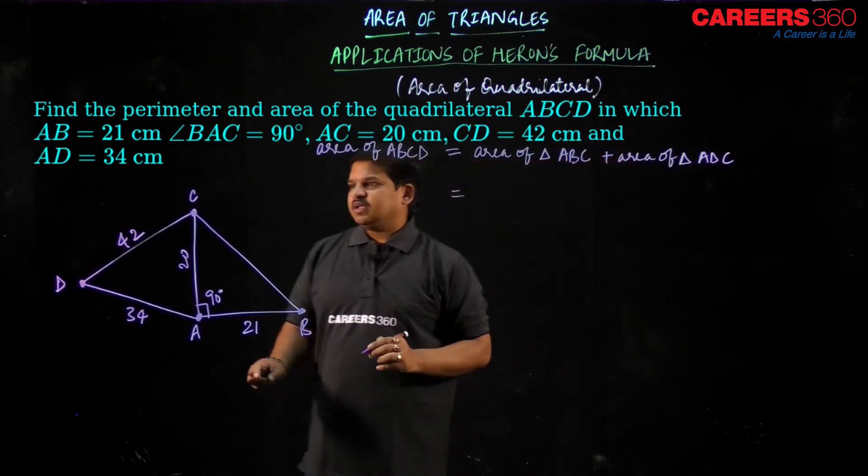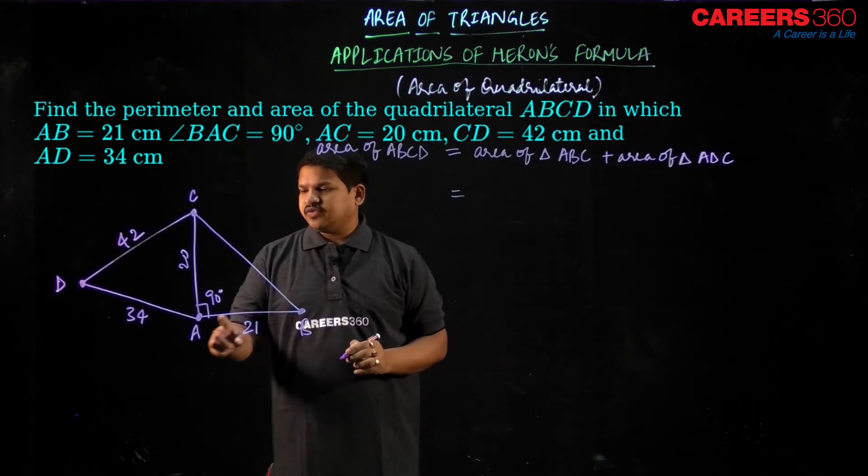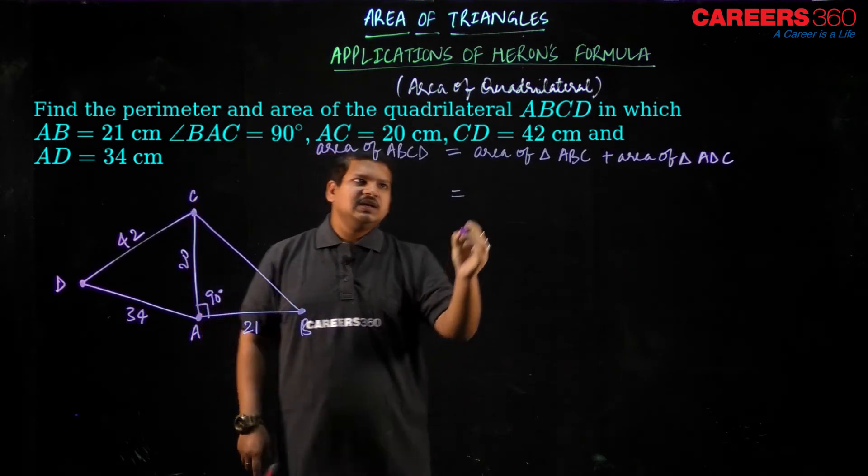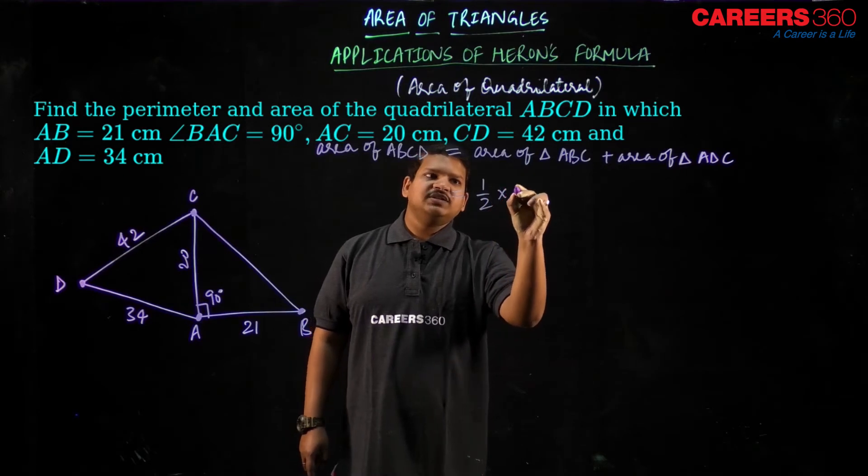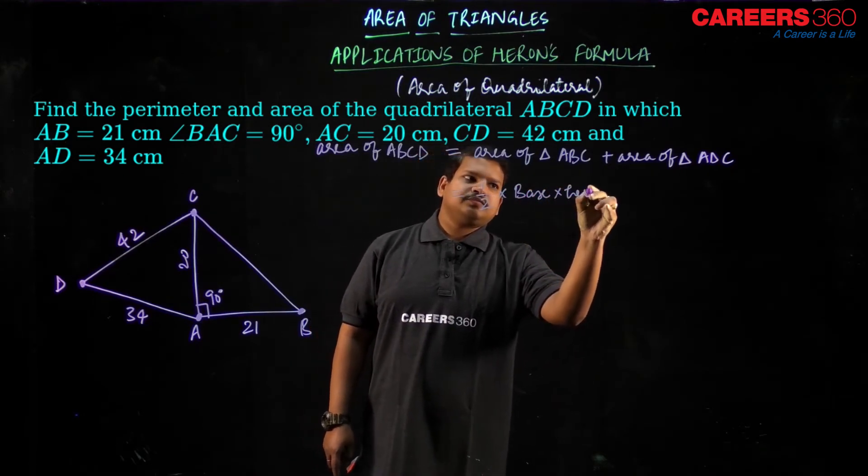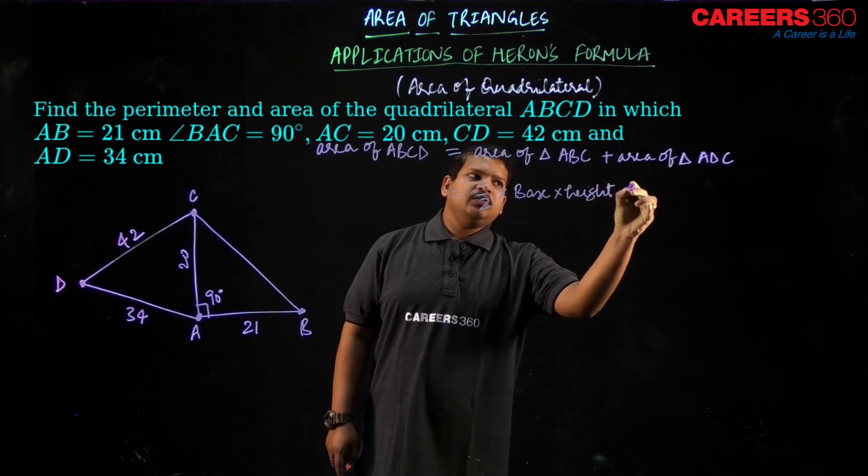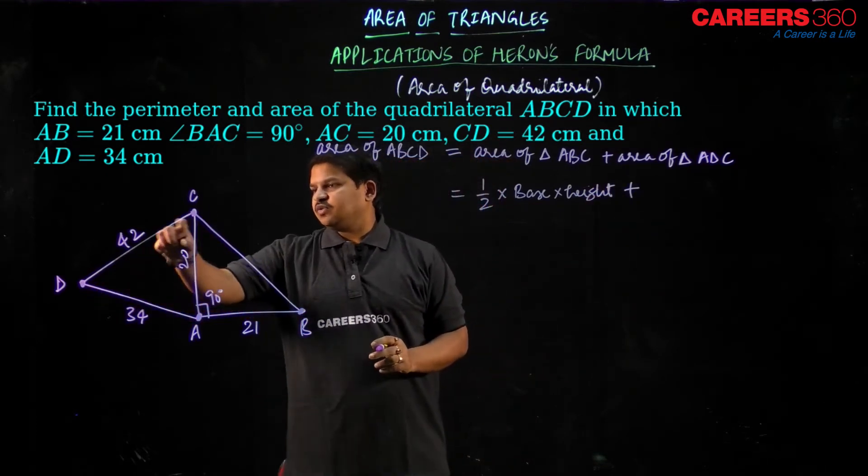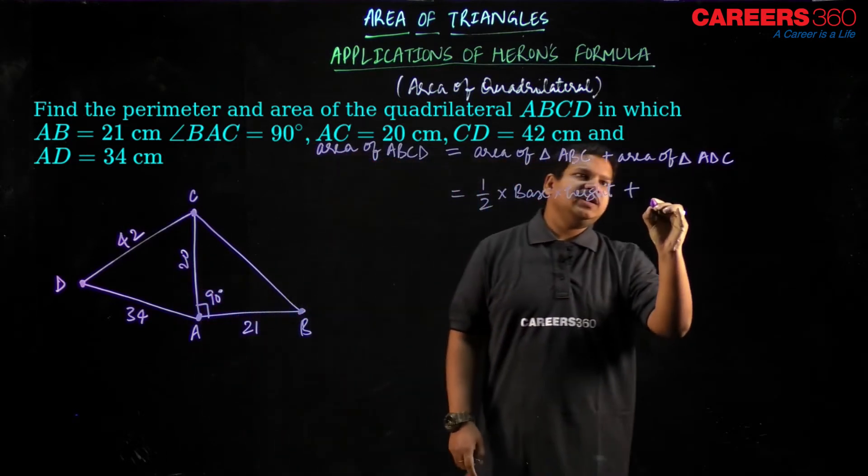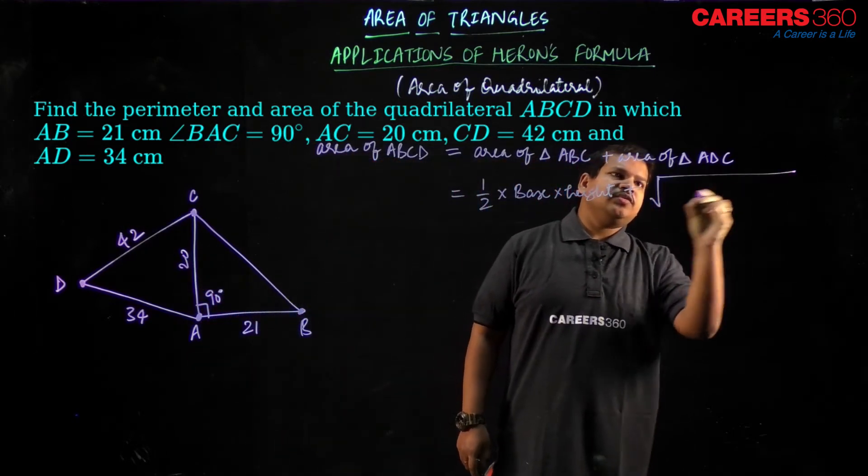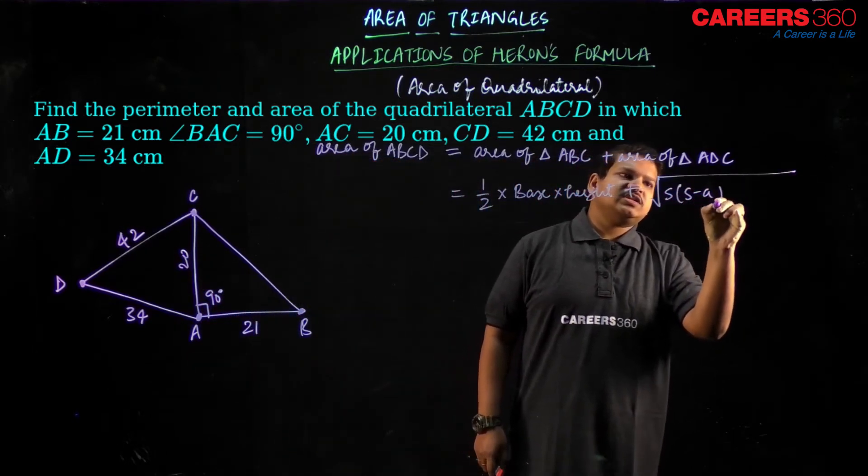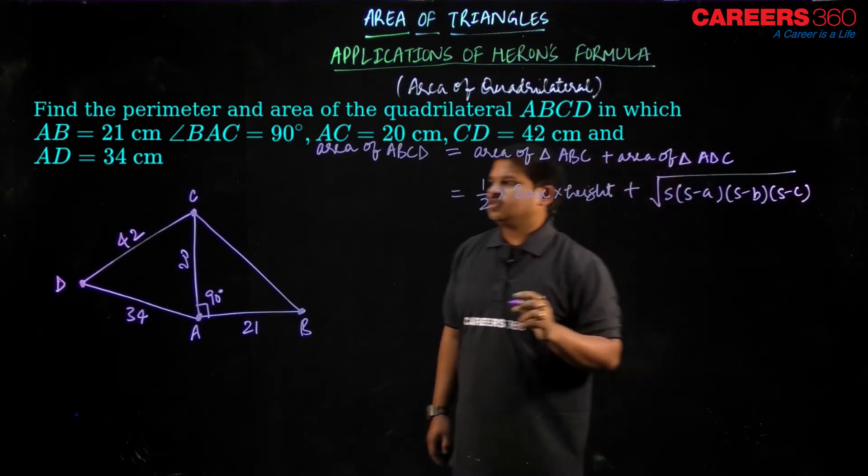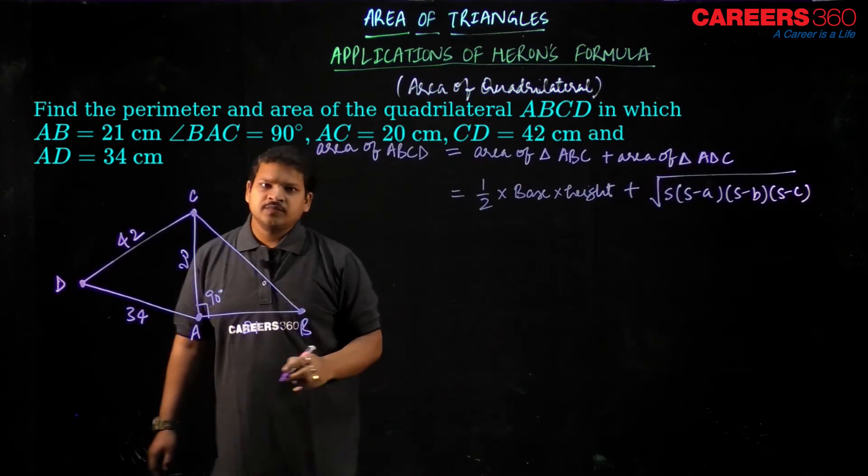As you can see if I want to find out the area of triangle ABC, this is a right angle triangle. So half into base into height can be applied over here. Similarly, area of ADC if I have to calculate, here Heron's formula can be applied that is under root of S into S minus A into S minus B into S minus C because all the three sides are given to me.